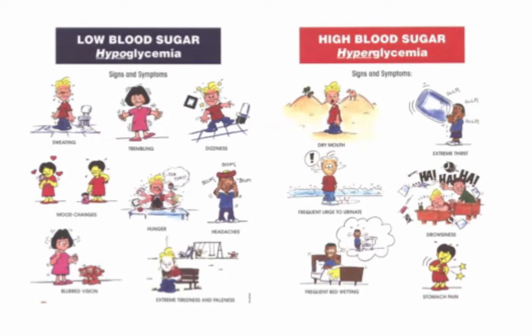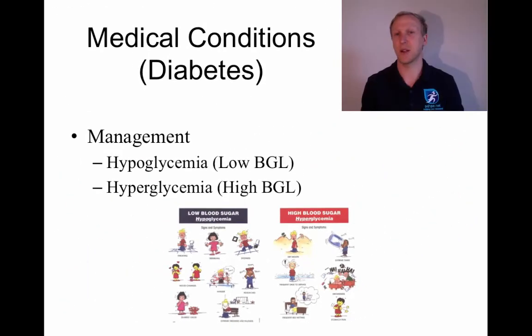Hyperglycemia — too much glucose in the bloodstream — presents with symptoms such as extreme thirst, frequent urination, irritability, and a dry mouth. To treat hyperglycemia, the person needs to reduce their blood glucose levels by doing a little physical activity, or they may need an insulin injection to manage it.